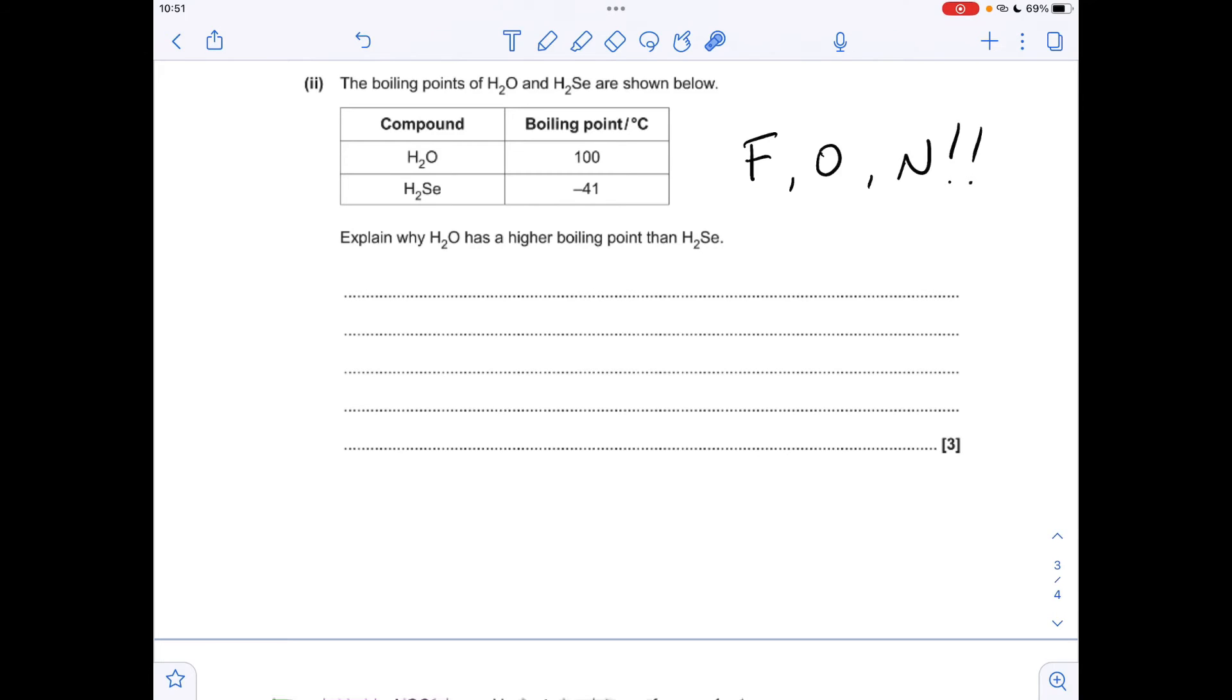Moving on the next part, why have I written F O N? It's because if you have a hydrogen directly bonded to an F, an O, or an N you have hydrogen bonding between the molecules and they are typically stronger than other intermolecular forces. So between water molecules or H2O molecules you're going to have hydrogen bonds because you've got an H directly bonded to an O, so that raises its boiling point to 100 degrees C.